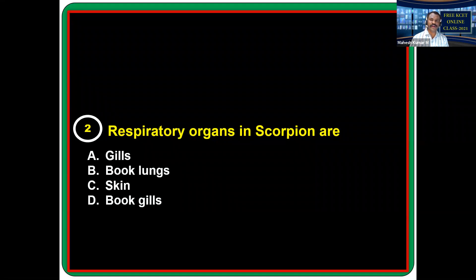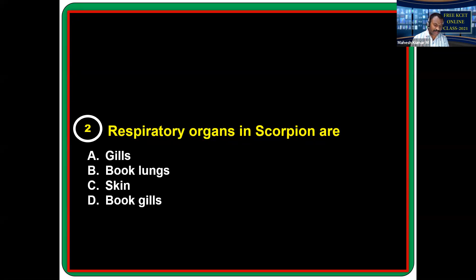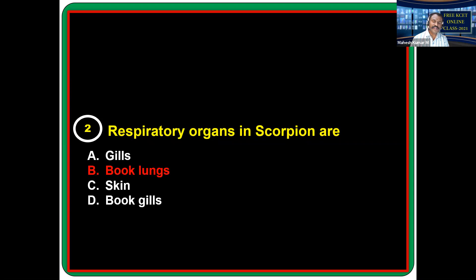Respiratory organs in scorpion: scorpion is an arthropod. In arthropods you can see gills, book gills, book lungs, and trachea. For scorpions specifically, book lungs are the respiratory organs. Book gills are found in Limulus — the king crab — as the respiratory organ.